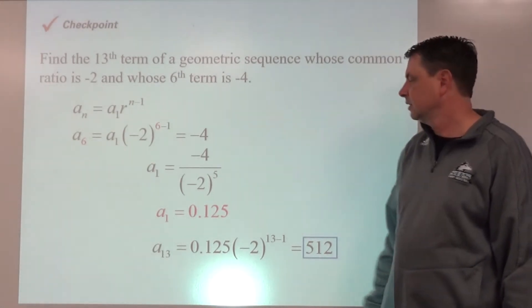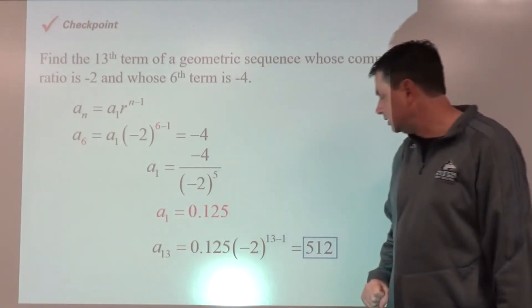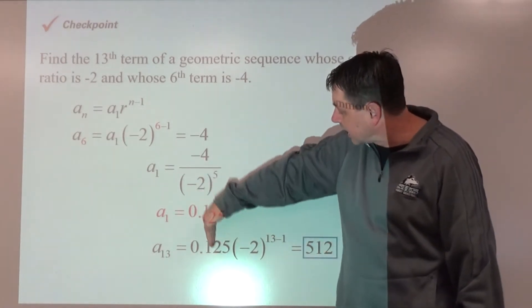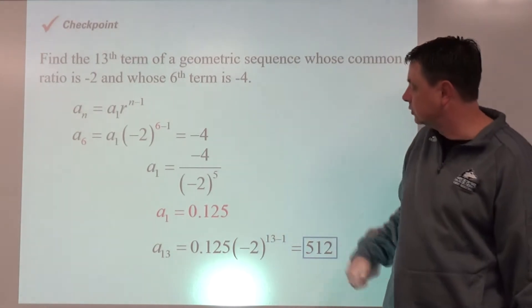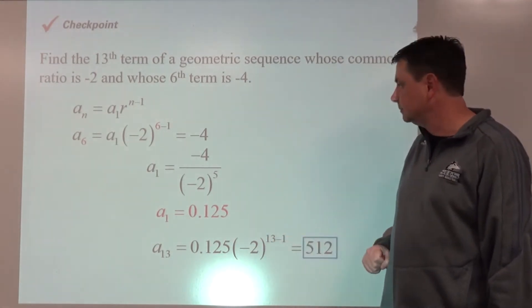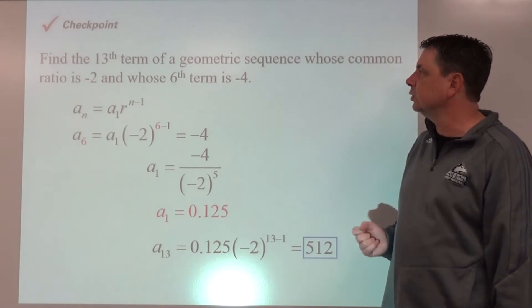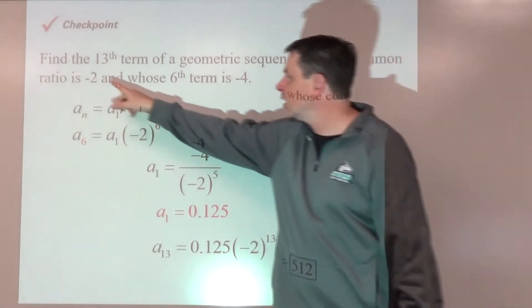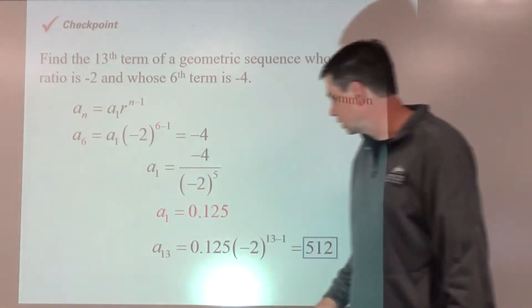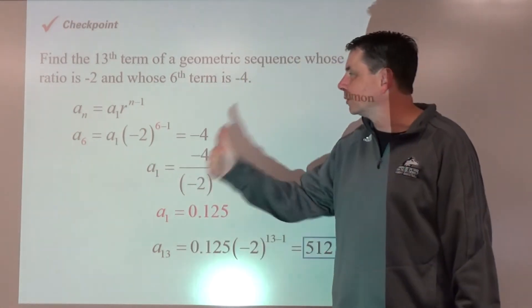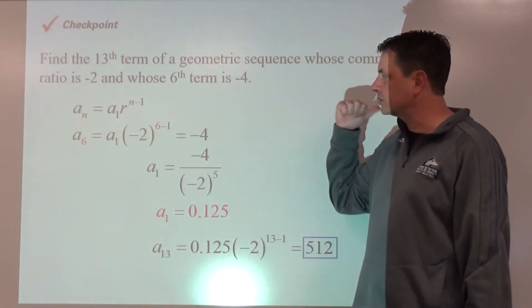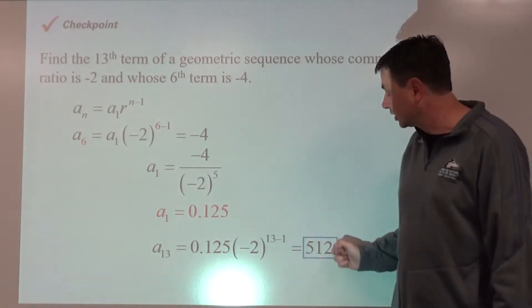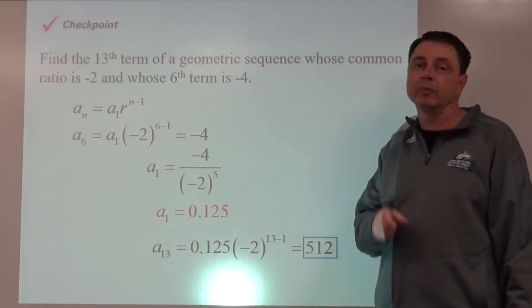For a-sub-13, there are a couple of approaches. We can go back to a-sub-1 times r to the n minus 1. Alternatively, knowing we have the sixth term and the common ratio, we can connect the sixth term to the 13th term — it's seven more terms — so multiplying by r to the seventh power also gets you there.